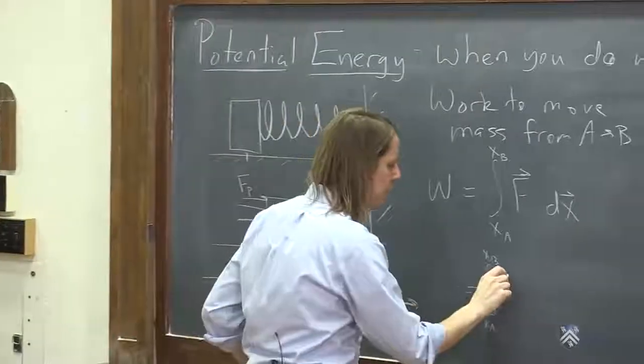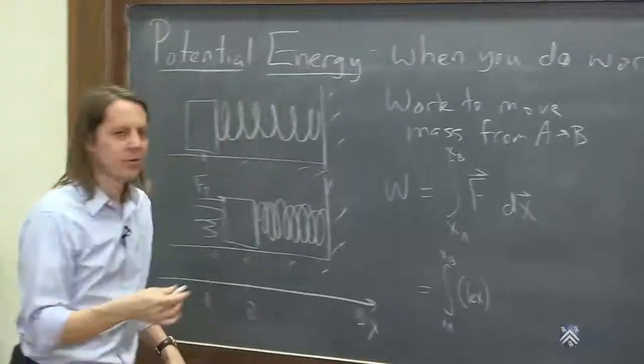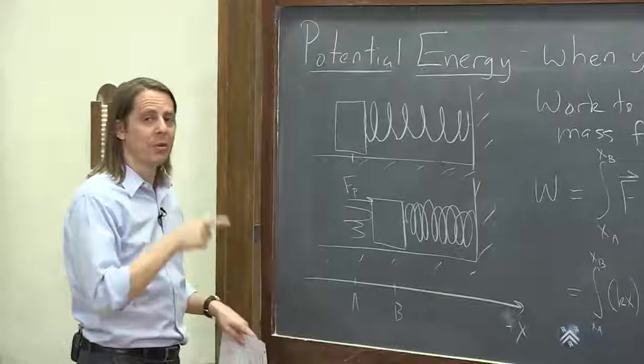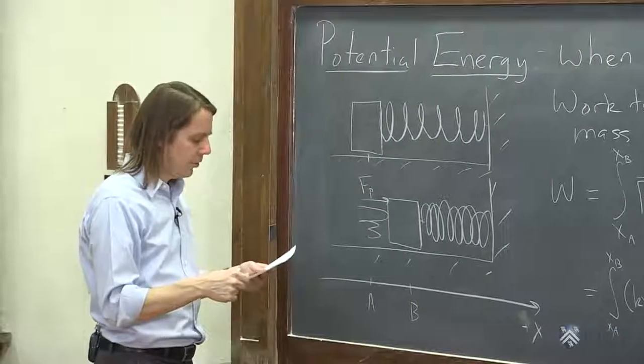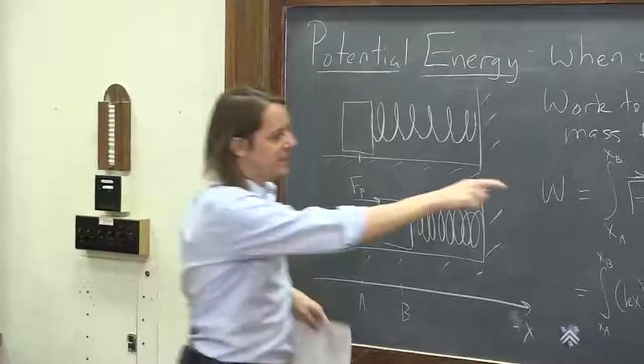I'm going to leave that negative sign out from Hooke's law, because I'm not calculating the spring's force. I'm calculating our external force. So that's kx and then dx.